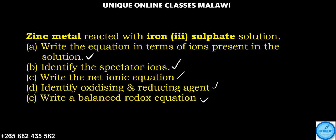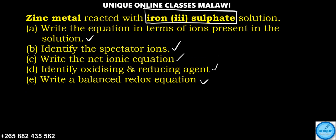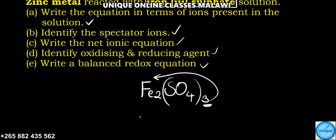So what we're going to do is write the formula. Iron three, that's Fe₂(SO₄)₃. So just a matter of exchanging charges - Fe³⁺ and SO₄²⁻. So that's the formula of iron(III) sulfate.